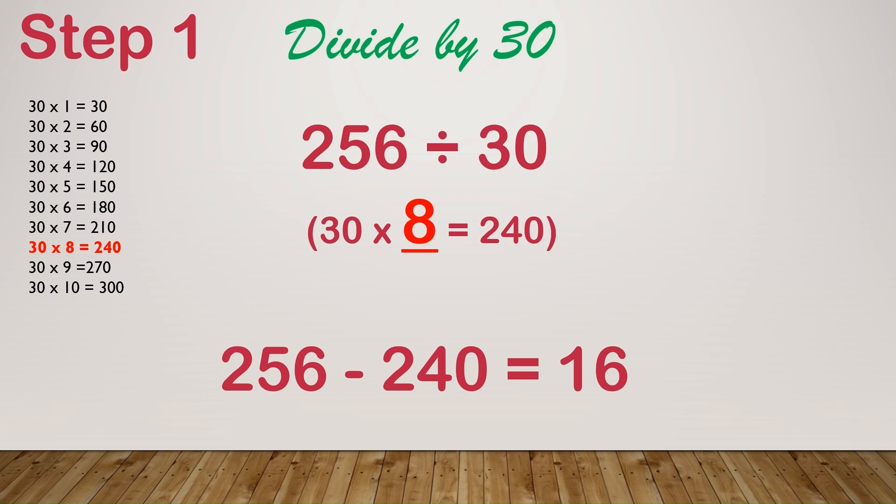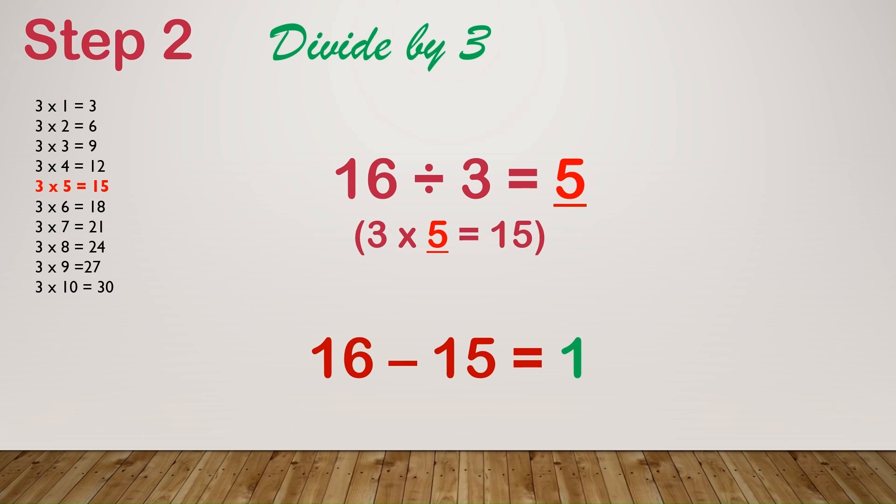This is the first digit of the quotient of 256 divided by 3. Next, subtract 256 and 240, which is 16. Now we will do the second step.